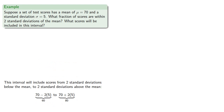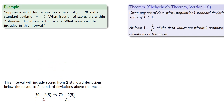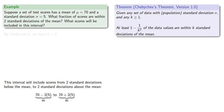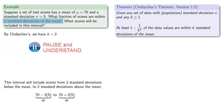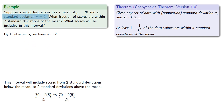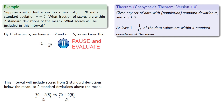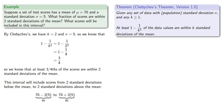By Chebyshev's theorem, we have k equals 2 — that's two standard deviations of the mean — and our standard deviation itself equals 5. So we know that 1 minus 1 over k squared equals 1 minus 1 over 2 squared, which is 3 fourths. So we know that at least 3 fourths of the scores are within two standard deviations of the mean.